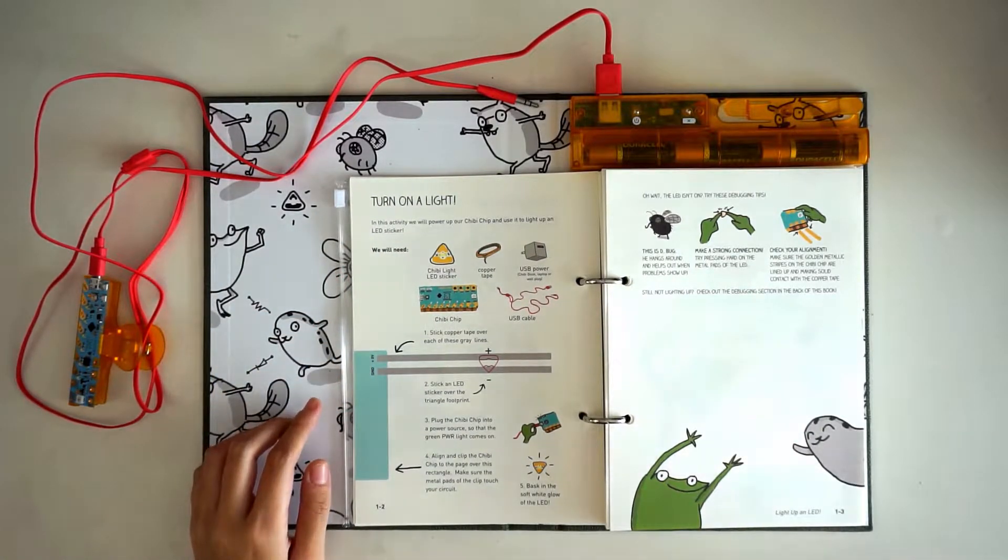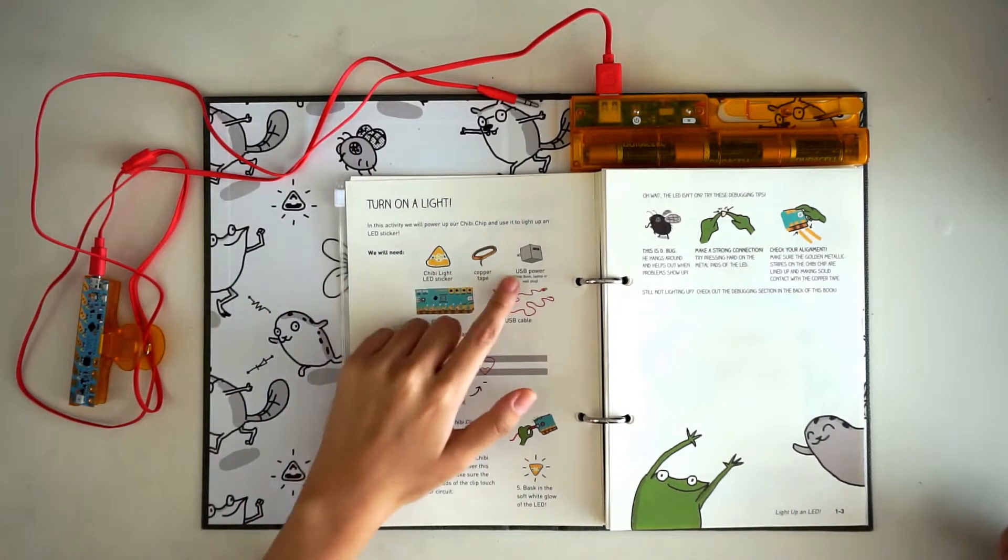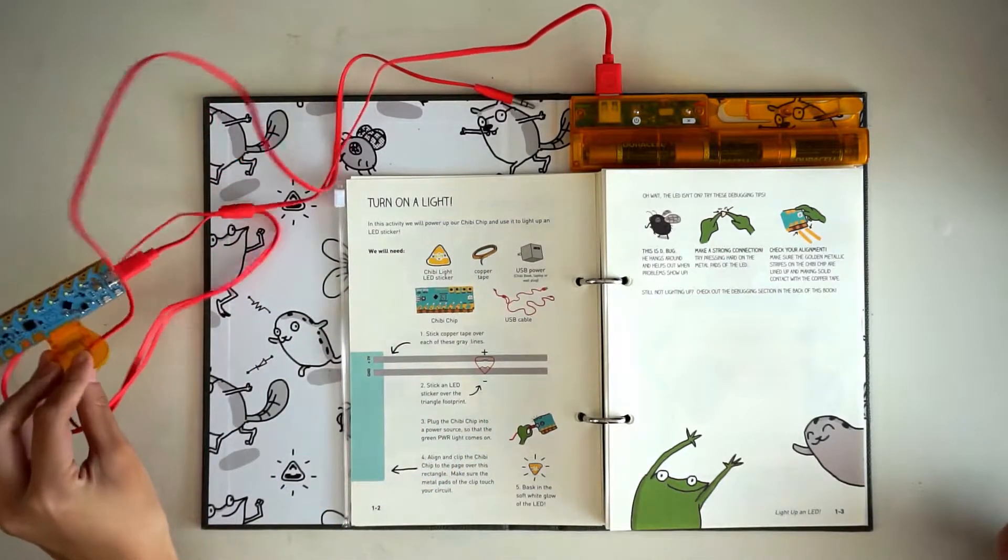Get your materials together. You'll need an LED sticker, copper tape, and a USB power source, which is built into your chibi book. And of course, your chibi chip.